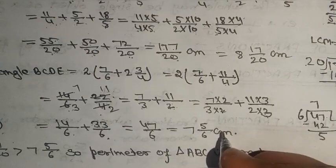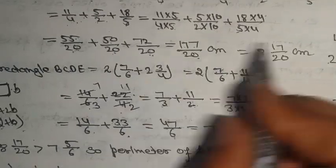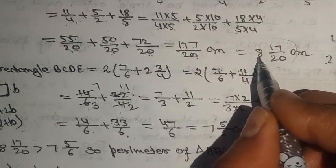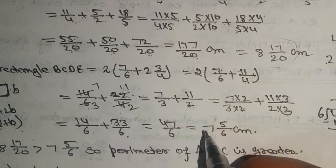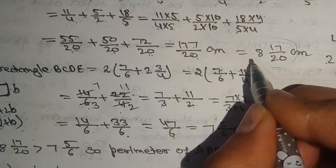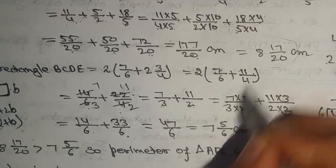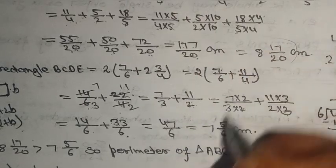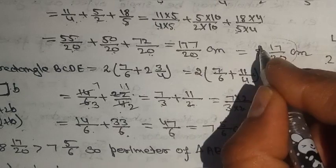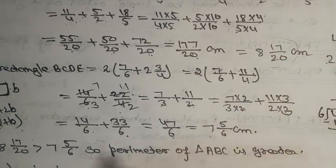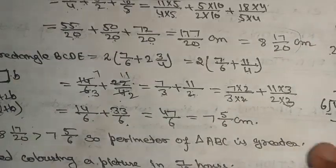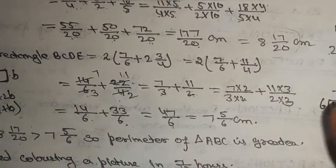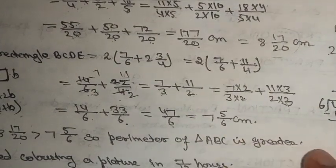The perimeter of the triangle is 8 and 17/20 cm and the perimeter of the rectangle is 7 and 5/6 cm. Comparing the whole parts: 8 > 7, so the perimeter of the triangle ABE is greater.